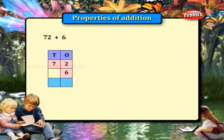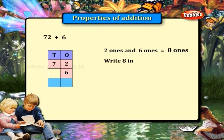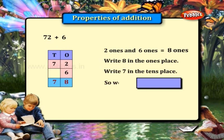72 plus 6. 2 ones and 6 ones give us 8 ones. So write 8 in the ones place. And write 7 in the tens place. We get 72 plus 6 is equal to 78.